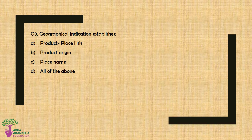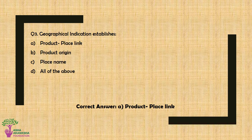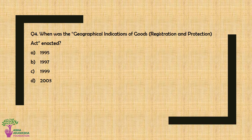Question No. 3: Geographical indication establishes — Option A: Product Place Link, Option B: Product Origin, Option C: Place Name, or Option D: All of the above. The correct answer is Option A — Product Place Link.